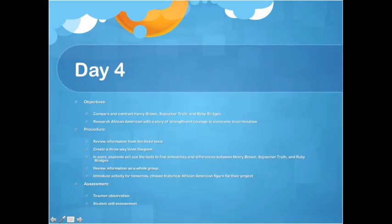On day four, the objectives are to compare and contrast the three characters from each book and introduce a new research project. Students will begin to research an African American with a story of strength and courage similar to the three characters we read about. We'll review information from the texts and together create a three-way Venn diagram as a class. Students work in pairs to find similarities and differences between Henry Brown, Sojourner Truth, and Ruby Bridges, then come up and fill in the Venn diagram on the board. I'll also introduce the activity for day five and give students a chance to look at multicultural texts to choose an African American figure for their project.